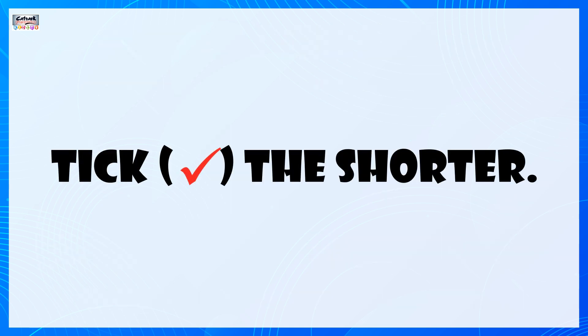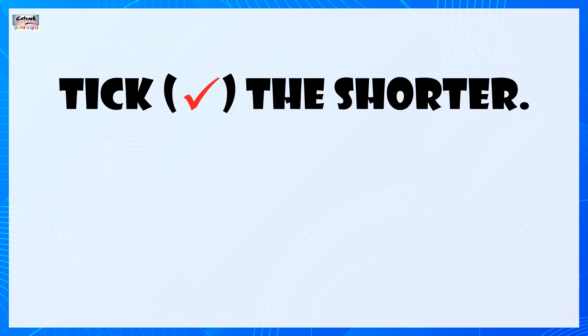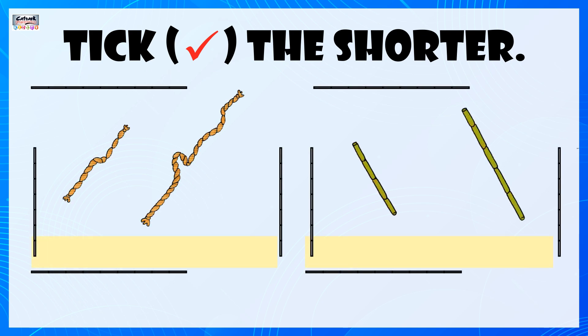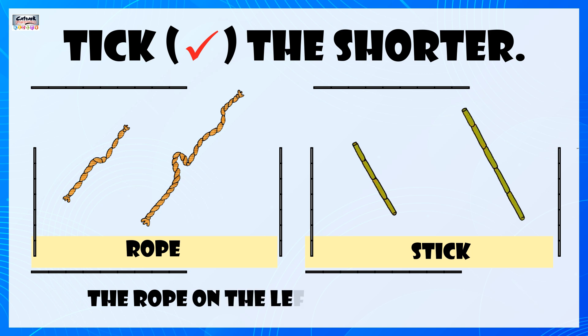Tick the shorter. The rope on the left side is shorter. The stick on the left side is shorter.